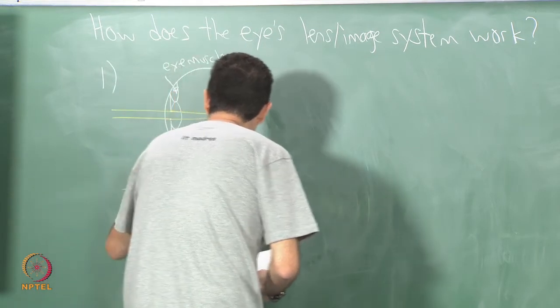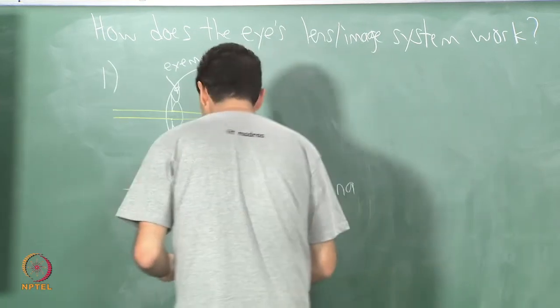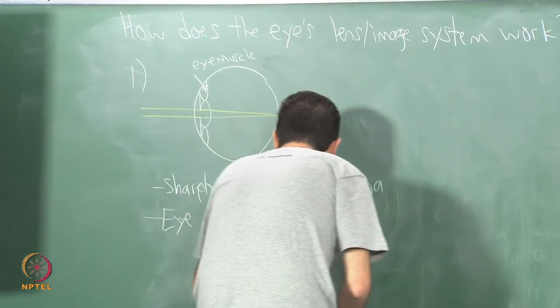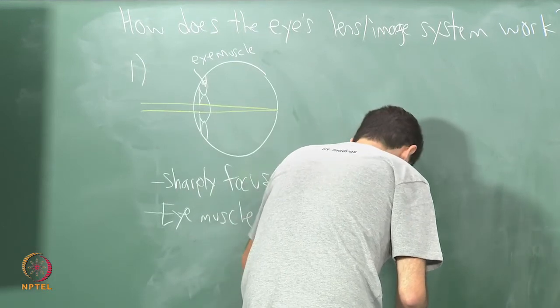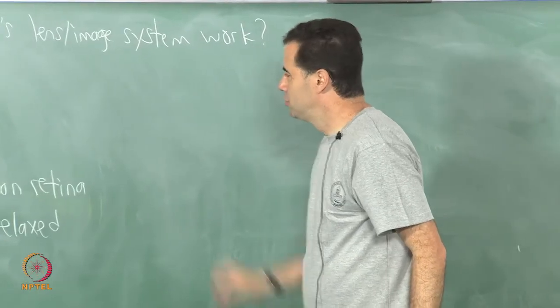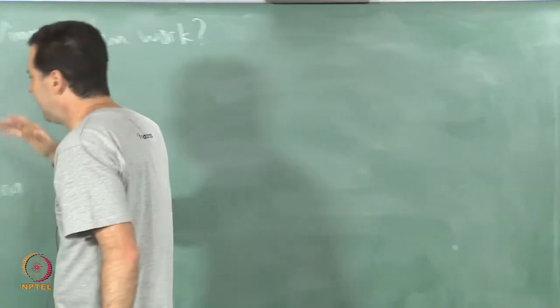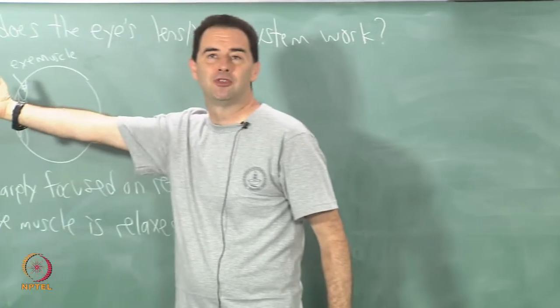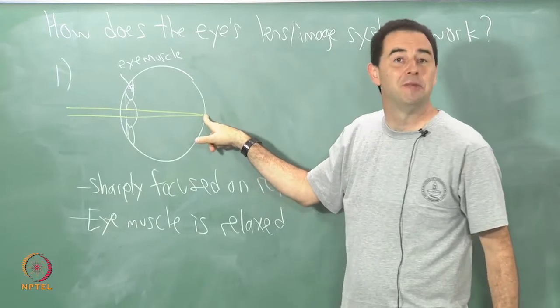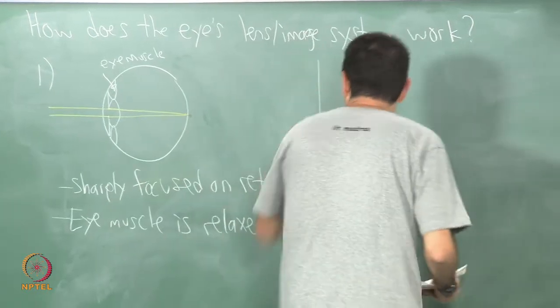In the usual case we have rays coming from infinity, let's say, and you get sharply focused on the retina and the eye muscle is relaxed. This is what happens in the normal case. Suppose you have no corrective vision of any kind. The most relaxed setting should be that light coming from a source at infinity, parallel rays coming in, should produce a nice image on your retina without your eye having to do any kind of work. No extra energy expended. That's the simplest case.